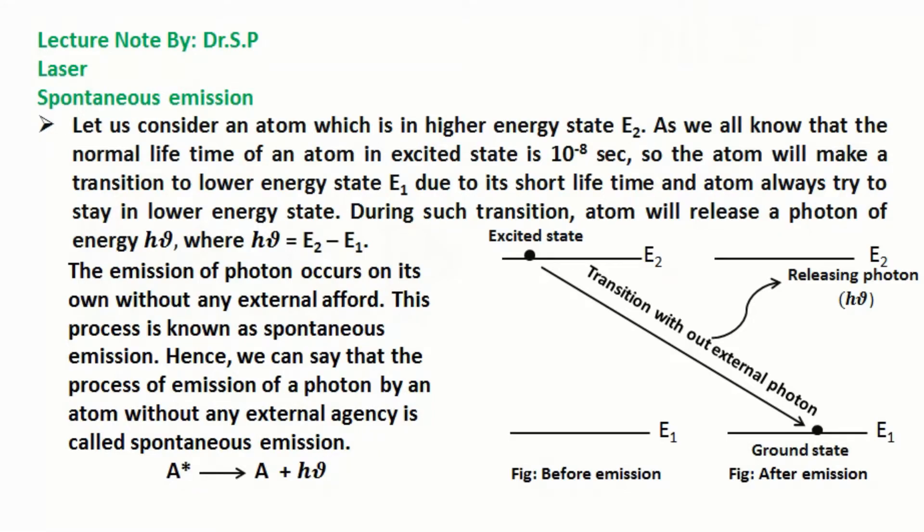Spontaneous emission. Let us consider an atom which is in higher energy state E₂. As we all know that the normal lifetime of an atom in excited state is 10⁻⁸ second, so the atom will make a transition to lower energy state E₁ due to its short lifetime and atom always try to stay in lower energy state.